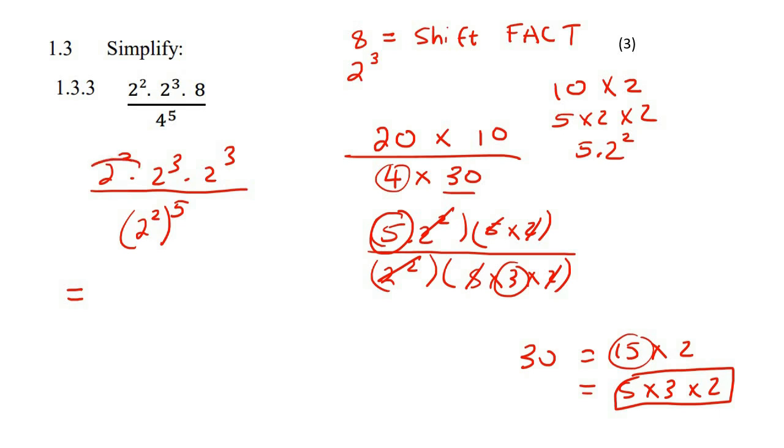So at the top here, a lot of learners make mistakes with this. If we have a squared multiplied by a three multiplied by a three, then what does that become? It becomes a, you don't change that part. And then what do you do with these? You add those exponents, and so that becomes an eight.